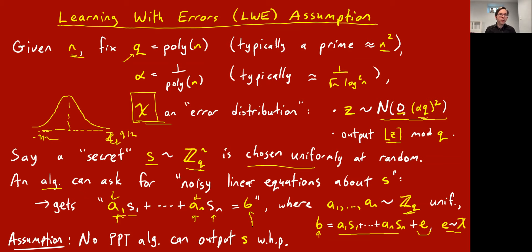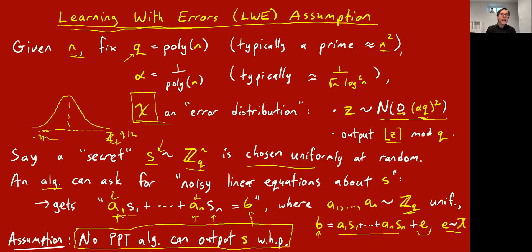The LWE assumption is that when you play this game — somebody holds the secret s and gives you back noisy linear equations — no PPT algorithm can exactly figure out s with high probability. It's related to things like decoding random codes and learning parities with error. People had reasonable intuition it was hard, and Regev proved this assumption is true assuming worst-case hardness of some lattice problem.